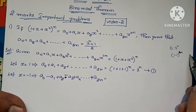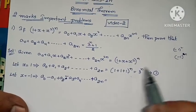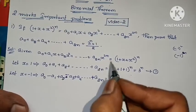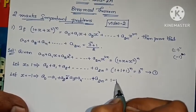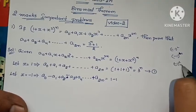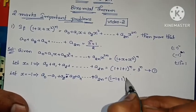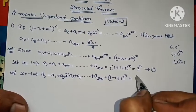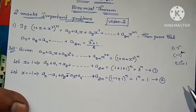Since the power is even, the value is positive. With x = −1: x² = (−1)² = 1, so 1 + (−1) + 1 = 1, and 1^n = 1. Therefore a₀ − a₁ + a₂ − a₃ + a₄ − ... + a₂ₙ = 1. Let this be equation 2.